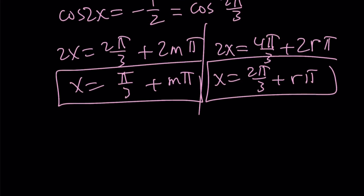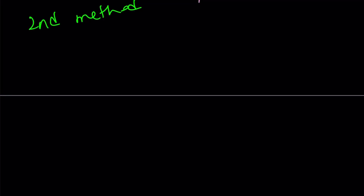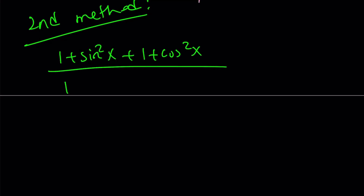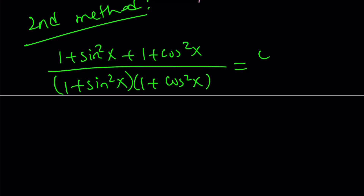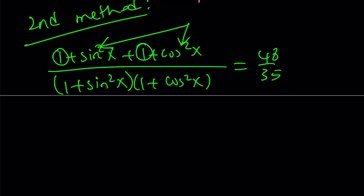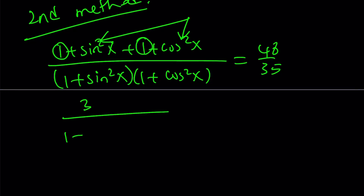Now let's look at the second method. Instead of using double angle formulas, I'll just make a common denominator. The numerator becomes 1 plus sine squared x plus 1 plus cosine squared x, divided by their product. Since sine squared plus cosine squared equals 1, the numerator simplifies: 1 plus 1 plus 1 equals 3. So we get 3 over (1 plus sine squared x)(1 plus cosine squared x) equals 48 over 35.